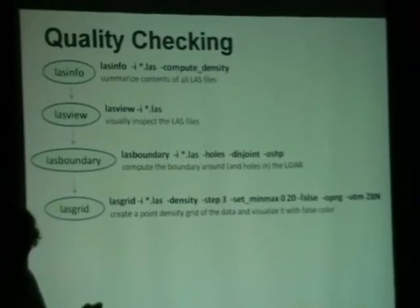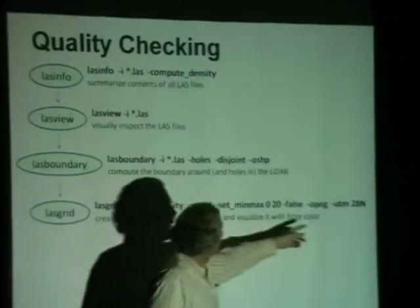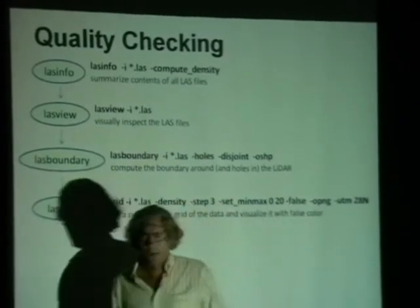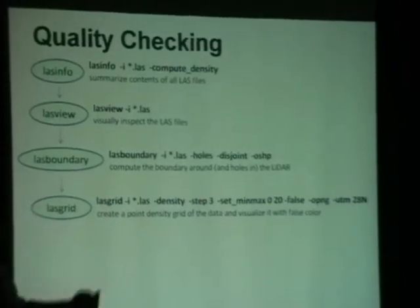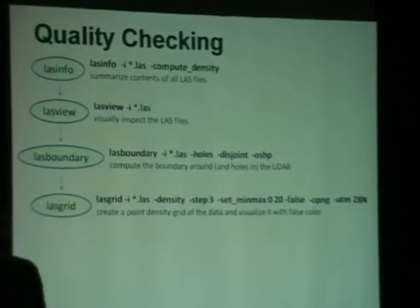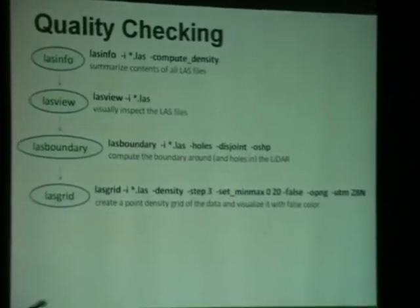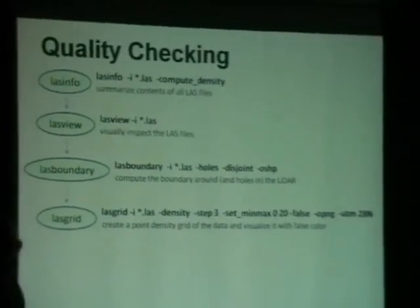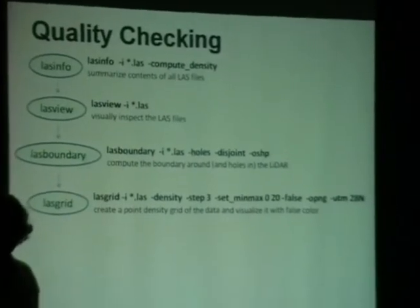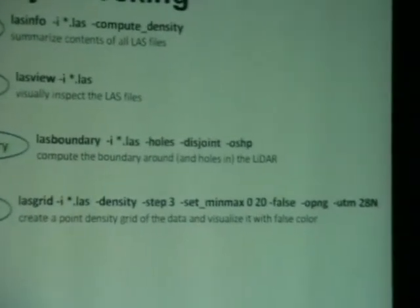LASgrid lets you create density rasters, or you can instantly see where data is missing. By adding a false-colored PNG output, and assuming the data has the correct spatial reference of, say, UTM 28, it will automatically create KML files alongside the images. So when you double-click, it positions in Google Earth at the right spot. For ArcGIS you may want to use TIF instead, where the spatial referencing is embedded.